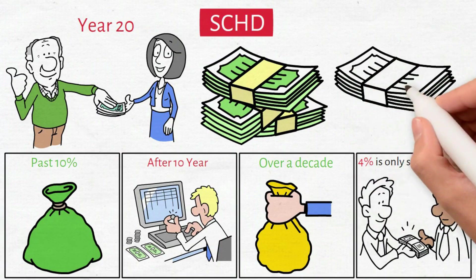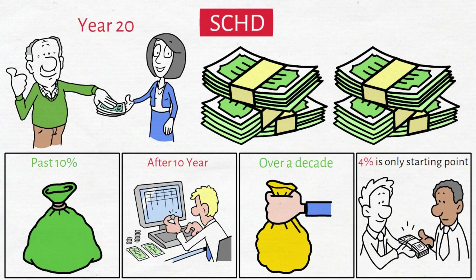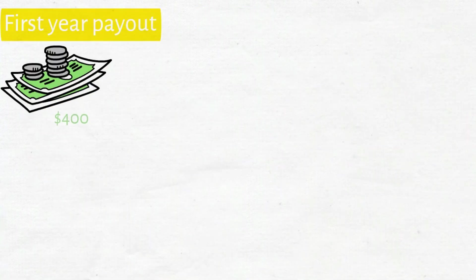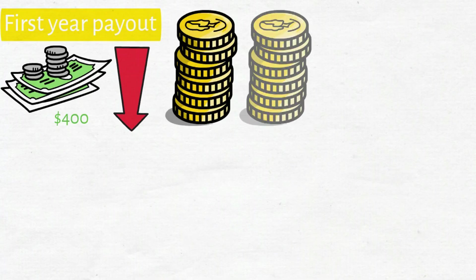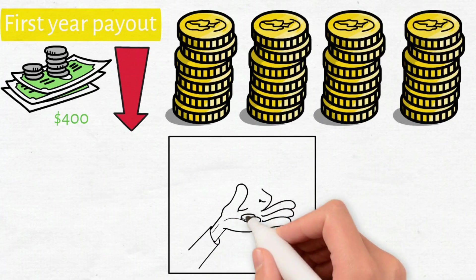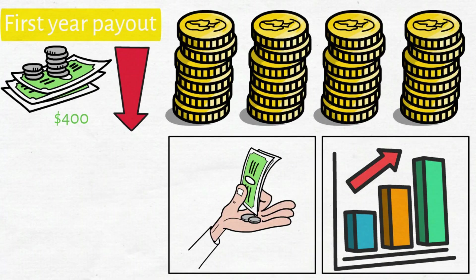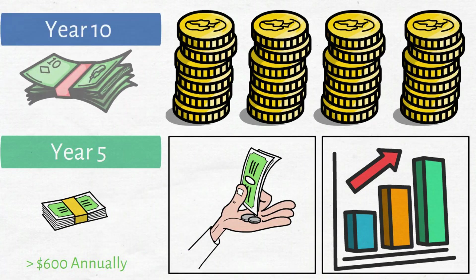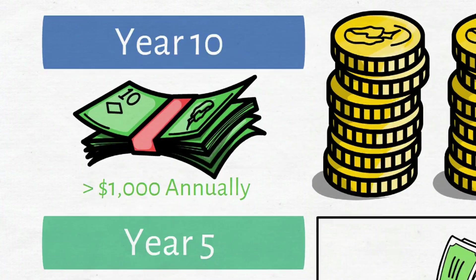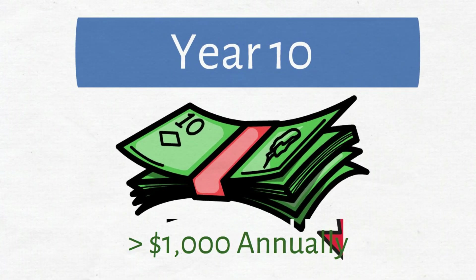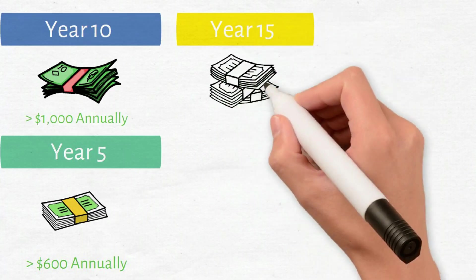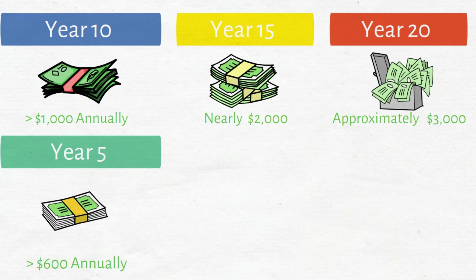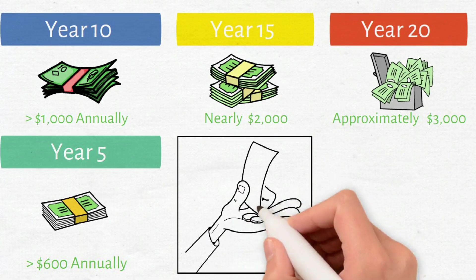Let me show you exactly what happens with $10,000. Invest that capital in SCHD shares today. First-year payout? Roughly $400. Seems small, right? Watch what compound growth does next. With payout reinvestment and historical growth rates, year 5 generates over $600 in annual income. Year 10, over $1,000 annually. Your initial capital now produces four figures in passive income every single year. Year 15, nearly $2,000. Year 20, approximately $3,000 in annual income from that single original investment.